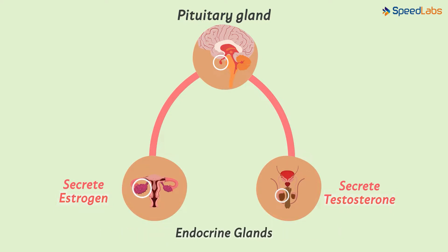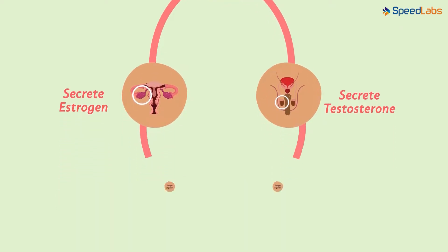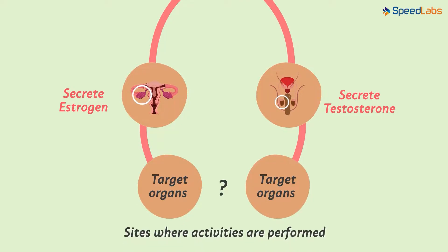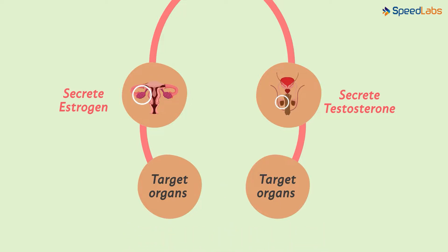The bloodstream carries these hormones to the target organs. What do we mean by the target organs? These are the sites where the necessary activity is performed — the sites where the hormones carry out their effect. So this is how the hormones work in our body. Exactly!